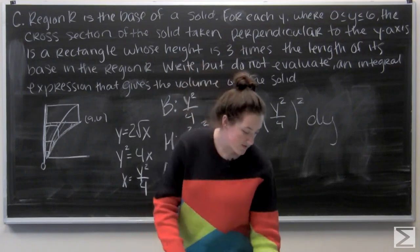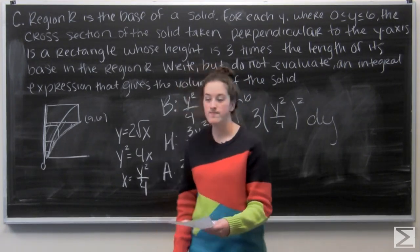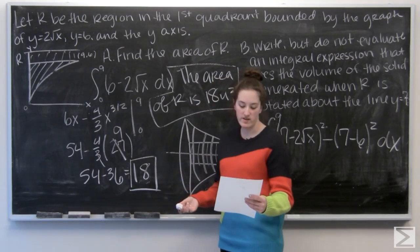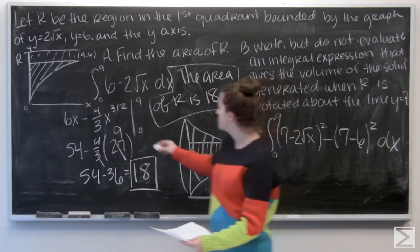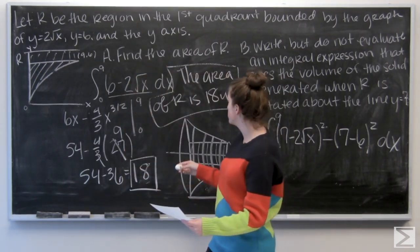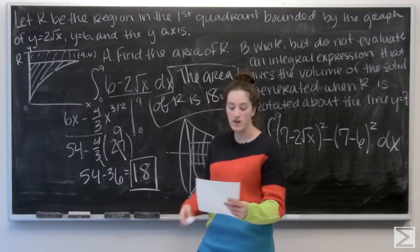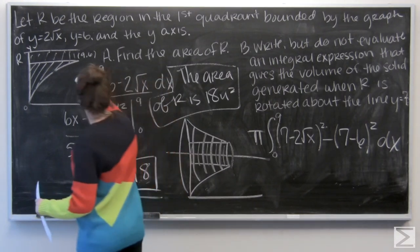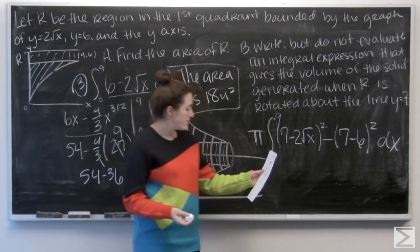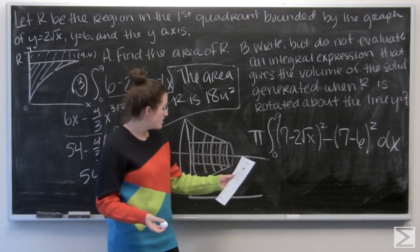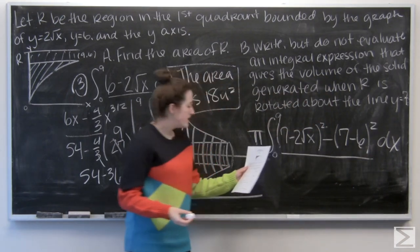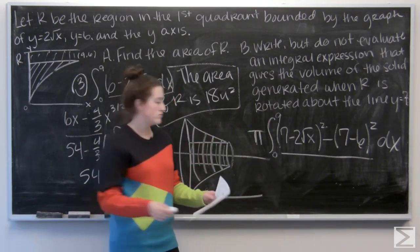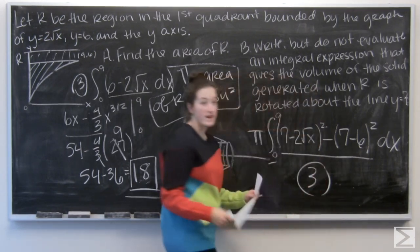Looking at the scoring guidelines: Part A earns 1 point for the integrand, 1 point for the antiderivative, and 1 point for the answer of 18 — all 3 points earned. For Part B, 2 points are awarded for the integrand and 1 point for the limits and the constant pi, with the integral going from 0 to 9 — all 3 points earned there as well.